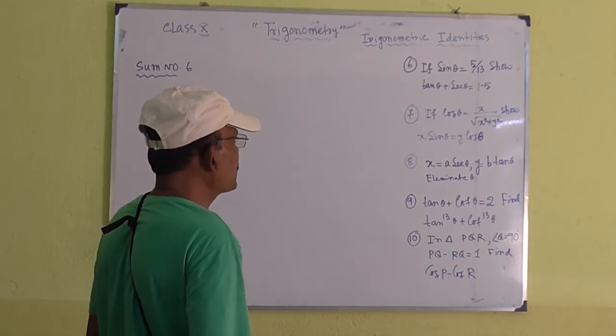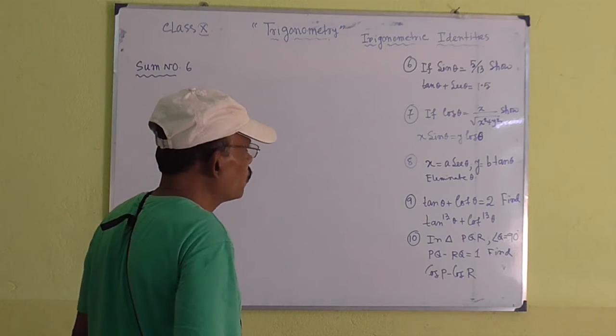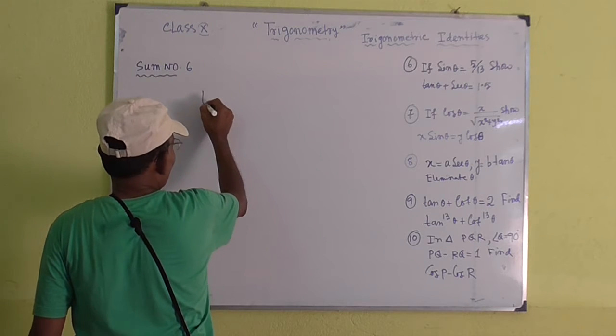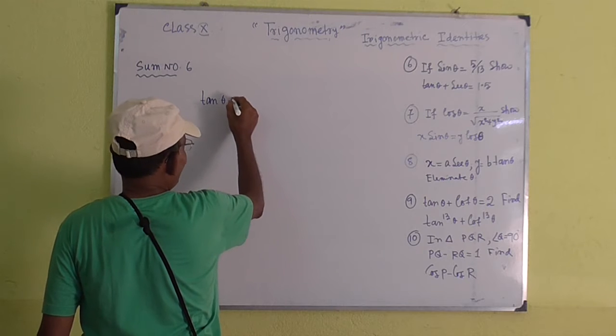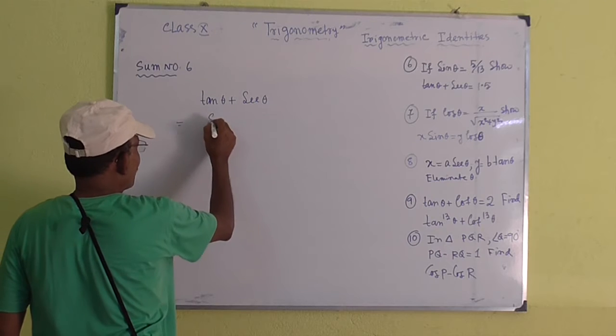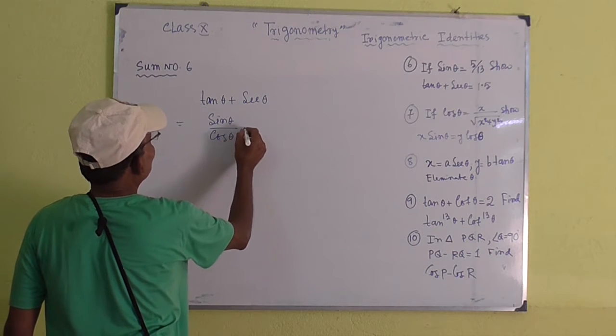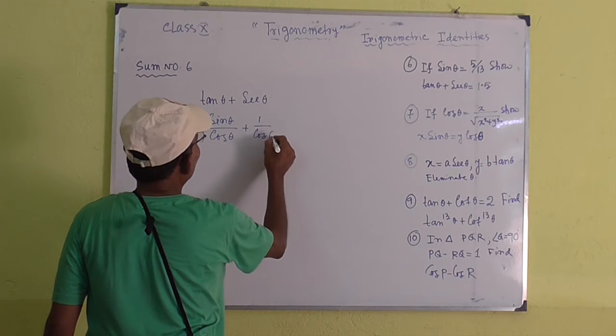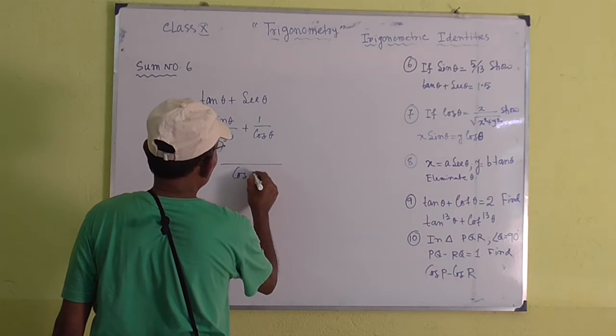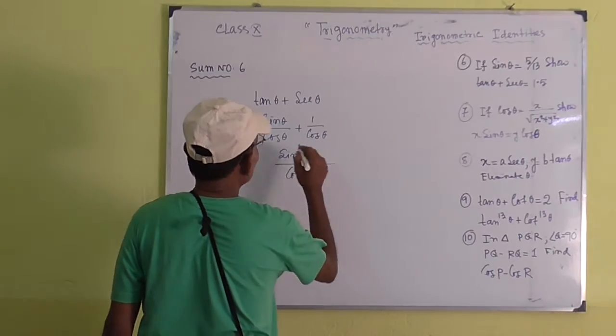If sin theta equals 5 by 13, so that tan theta plus sec theta equals 1.5. Now, tan theta plus sec theta equals sin theta by cos theta plus 1 by cos theta. Take LCM cos theta, so it gives sin theta plus 1.